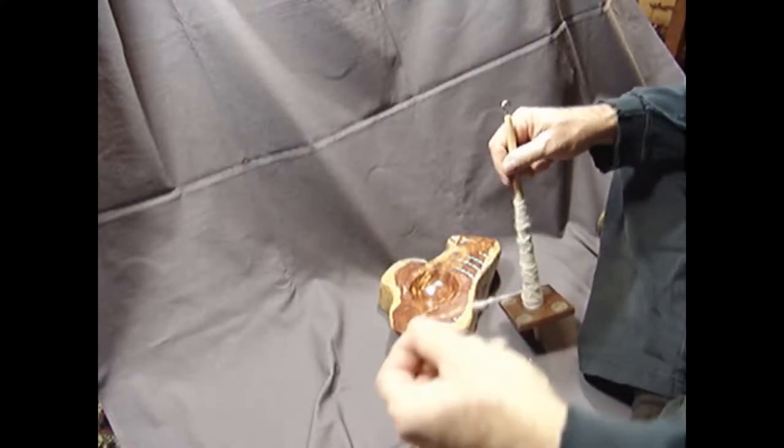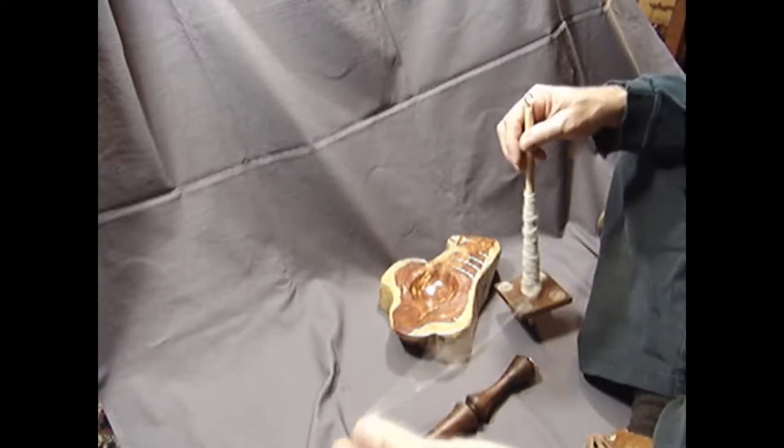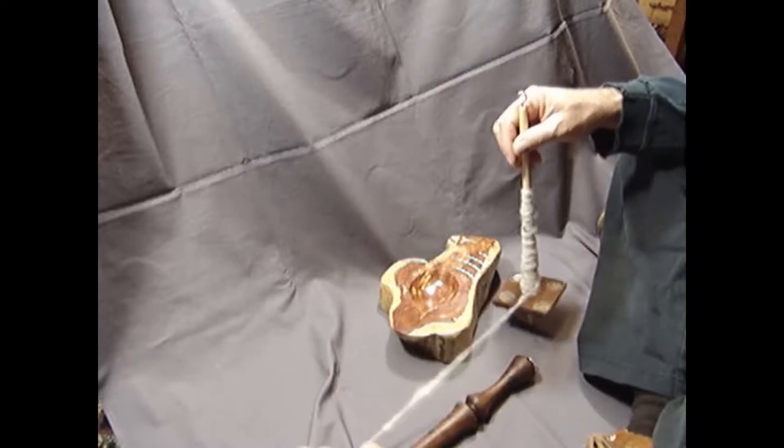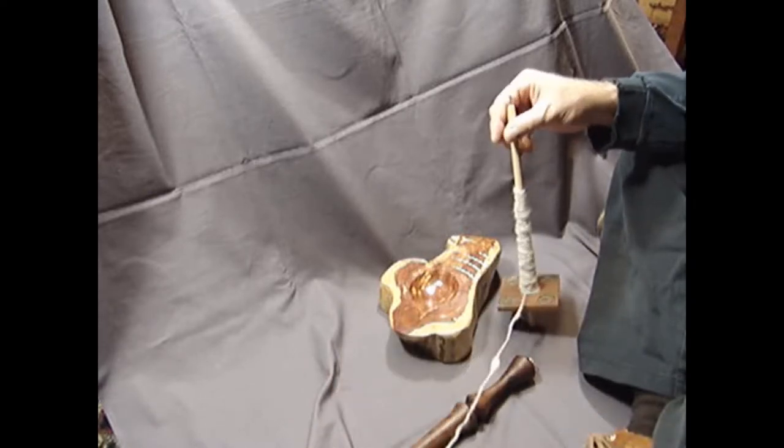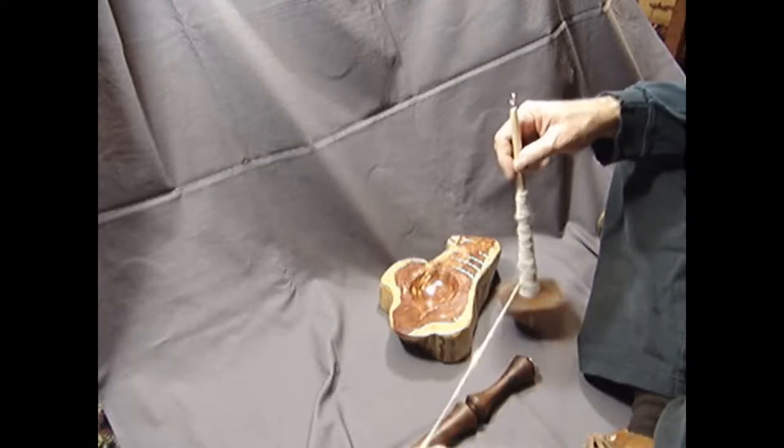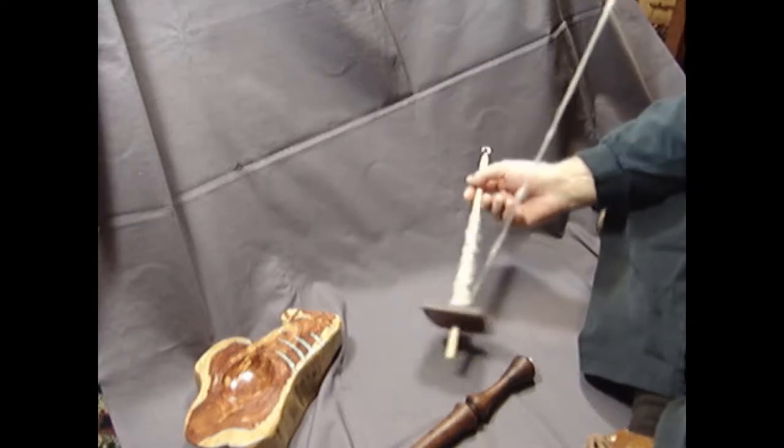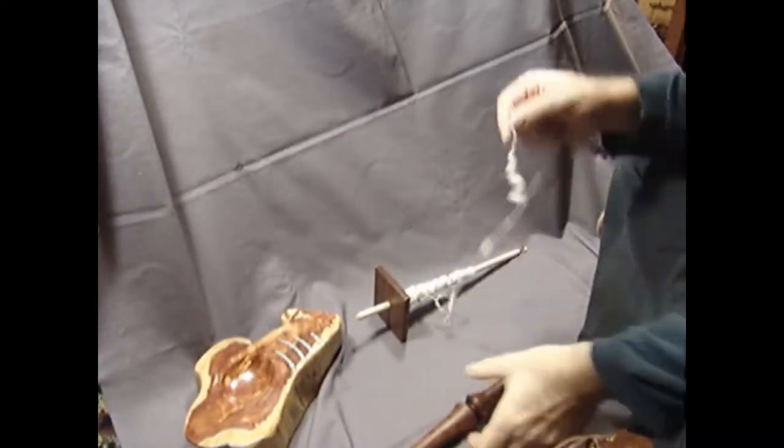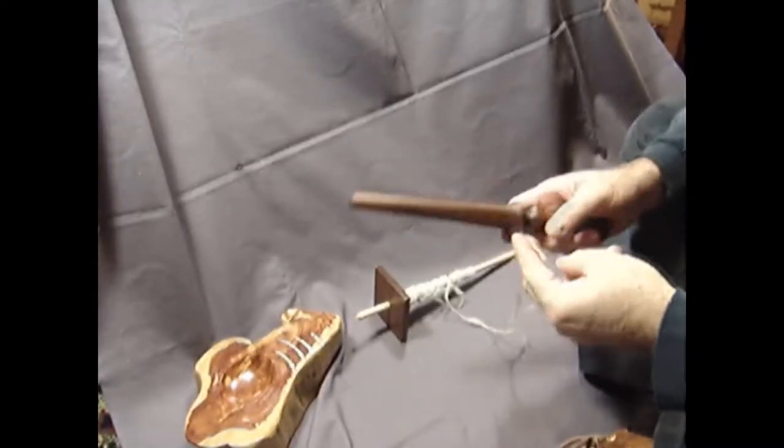A lot of people learn to spin and then the next step to making yarn sometimes is left out. So if you've got a nostepine and some sort of spindle, whether it's a drop spindle or a support spindle of all the different various types, it's very easy to make finished yarn. The first thing I'm going to do is take the singles off of my spindle.